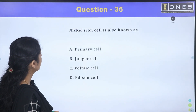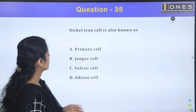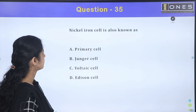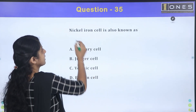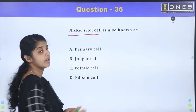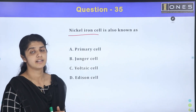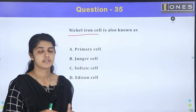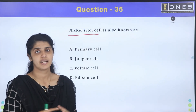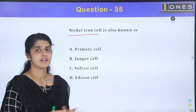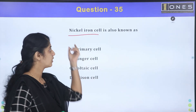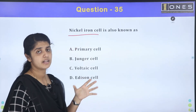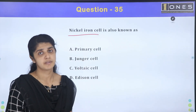Nickel ion cell is also known as an alkaline cell. If you study primary and secondary cells, we study alkaline cells. In the alkaline cell category there is the nickel ion cell and the nickel cadmium cell.